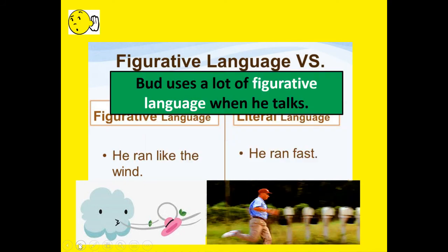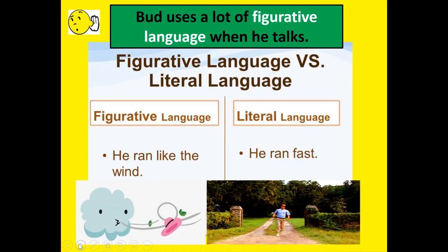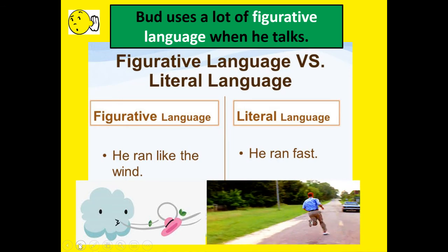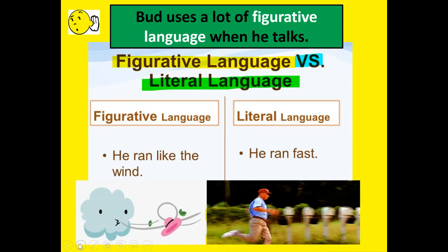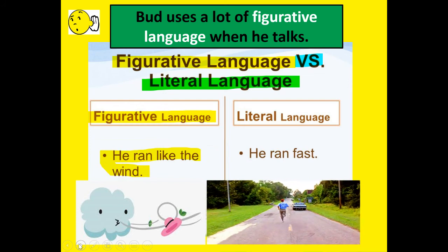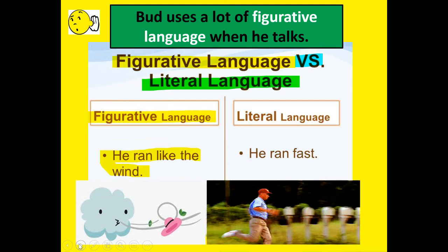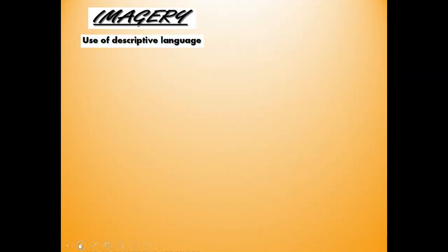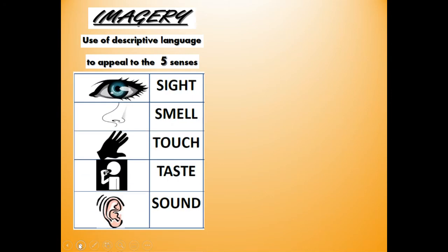Listen — Bud uses a lot of figurative language when he talks. Figurative versus literal: he ran like the wind would be figurative language; literal language would be he ran fast. Imagery is the use of descriptive language to appeal to the five senses: our sense of sight or what you see, our sense of smell, our sense of touch or what you feel, taste, and sound or what you hear.